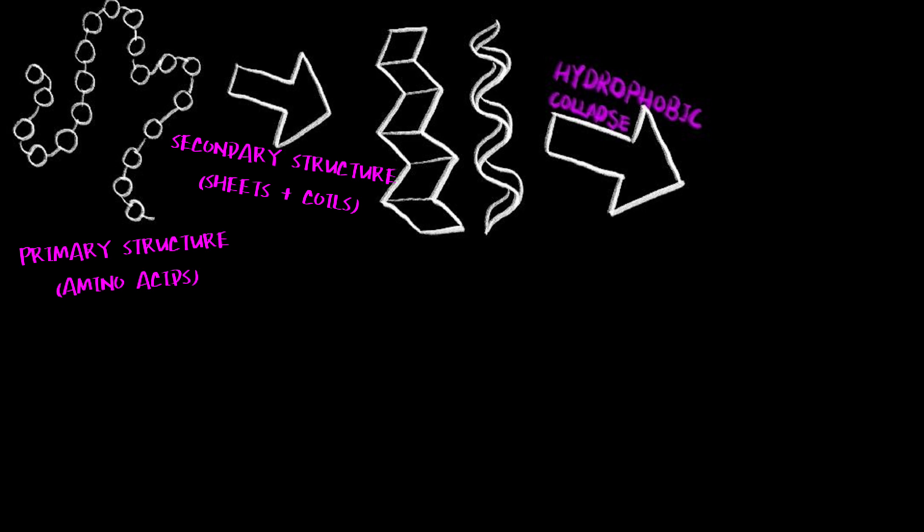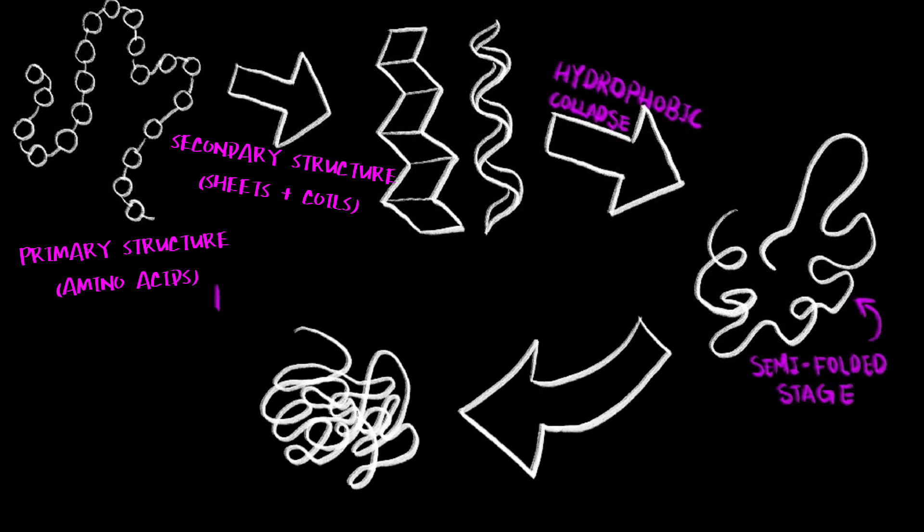At this point, the protein reaches the roughly correct, intermediate shape called the molten globule. It is not fully formed yet, but has some structure and will keep on adjusting until it finds its final, stable, three-dimensional shape, held together by various bond types.